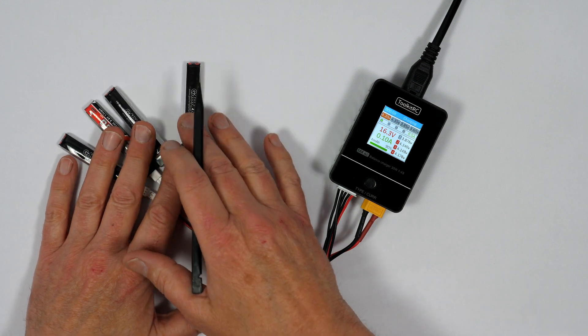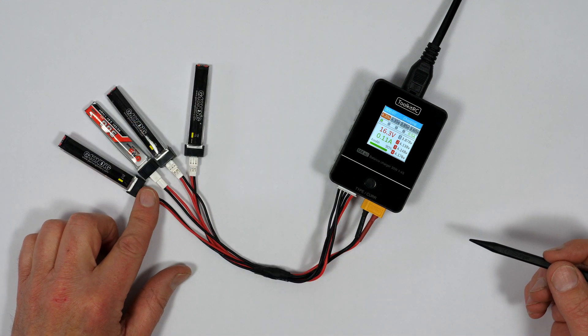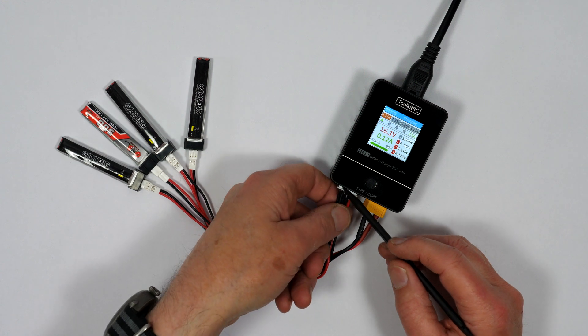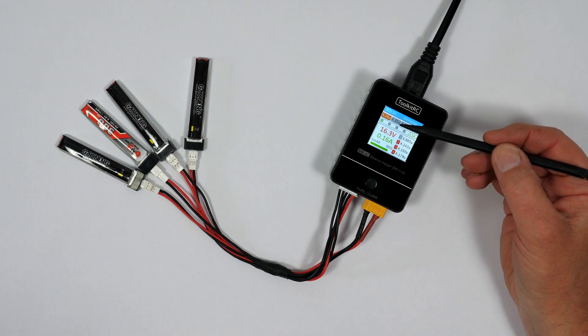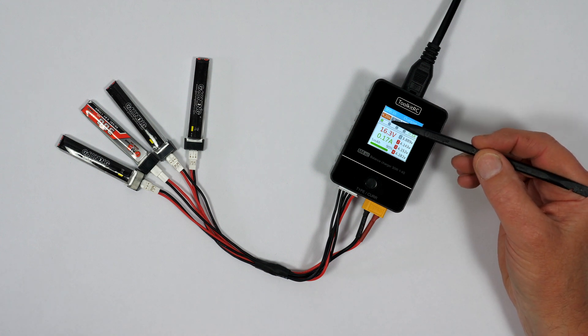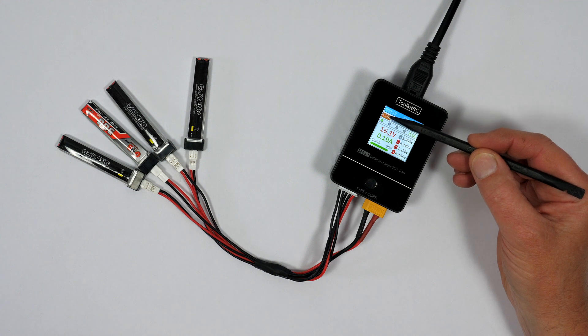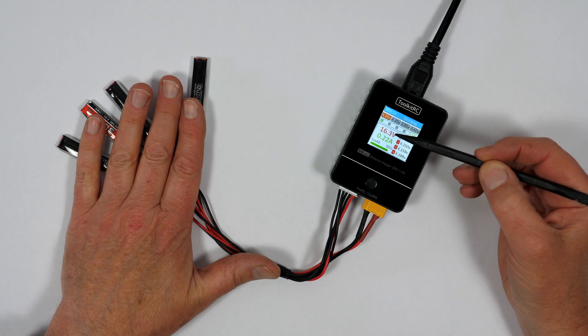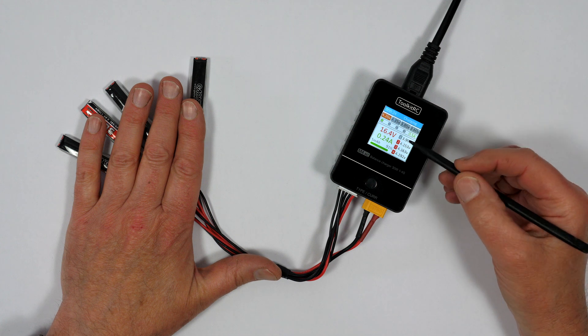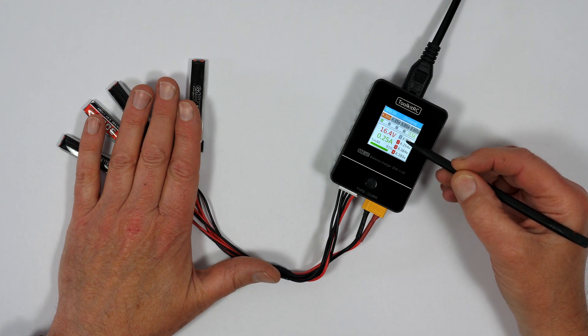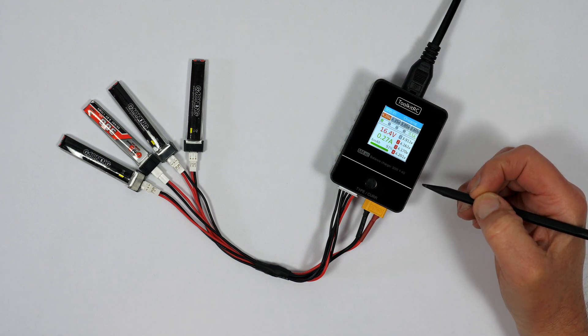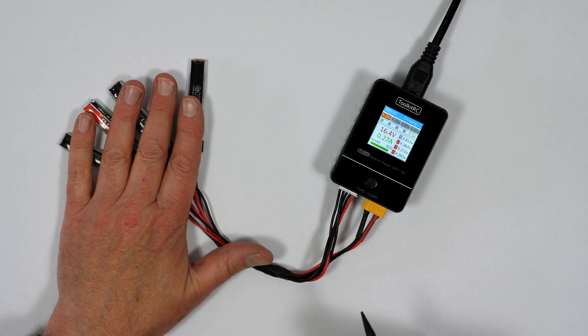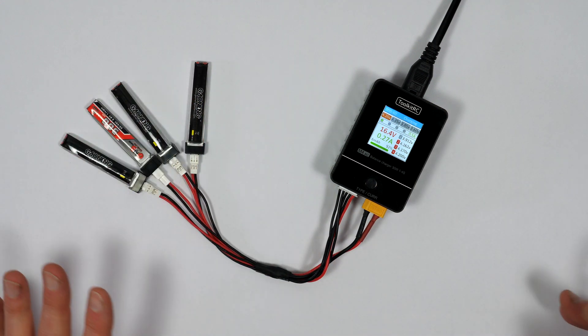So we've got our four 1S batteries on here, connected on the picoblade connectors that all go into the balance port on the charger. The main port is over here, connected across all of them. This is charging at the moment at half an amp or 500 milliamps, charging at 4.2 volts. The overall voltage of all of these is 16.3 volts. You can just about see here the individual voltages on the cell: one is 3.9, this is 4.1, 4.1 and 4.2.